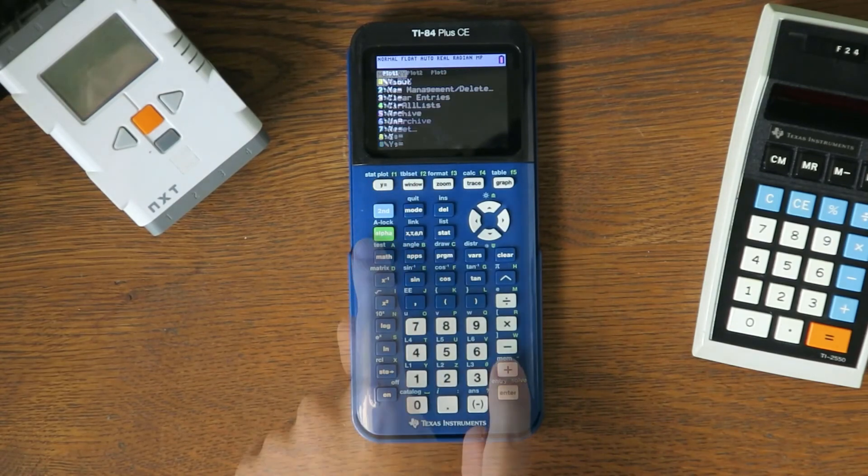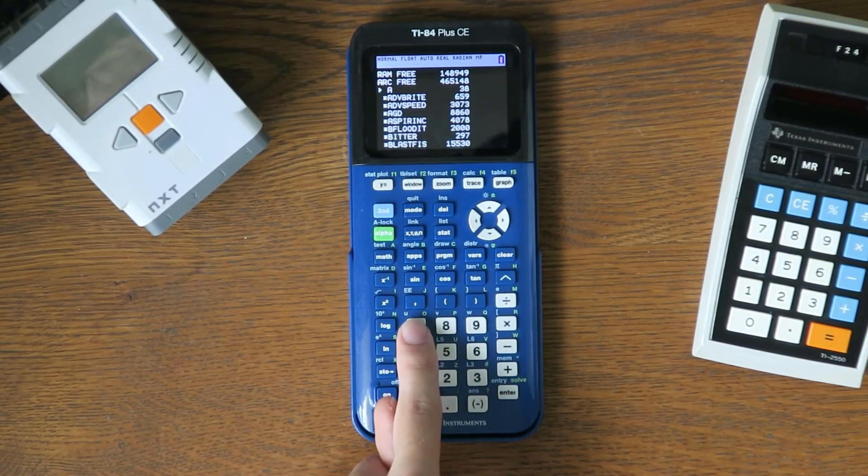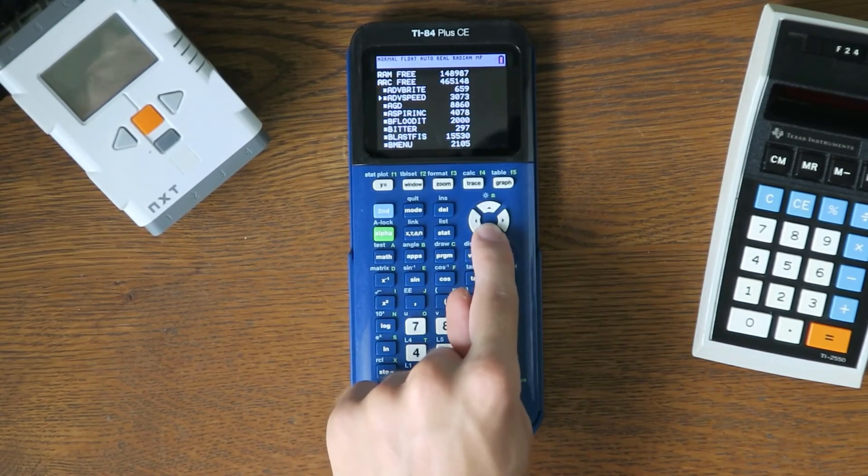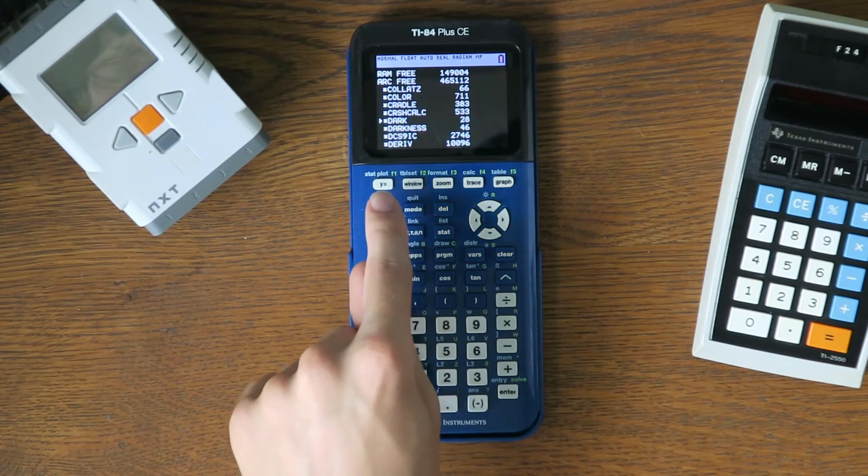If the program successfully runs, then you can go to the Memory Management screen and delete Program A. If you have OS 5.3.0 or above, then you can archive Program Dark so it won't get lost after a RAM reset.